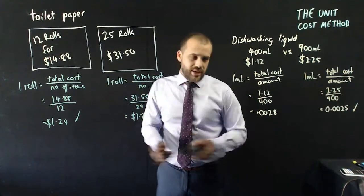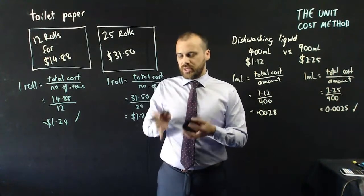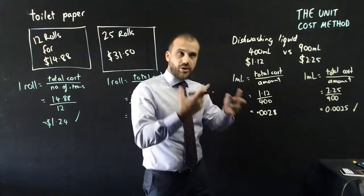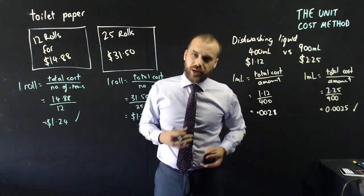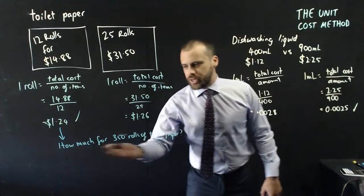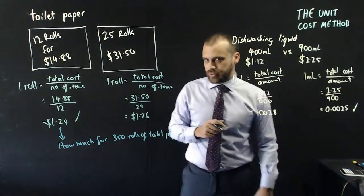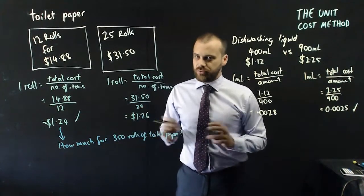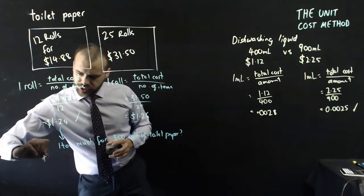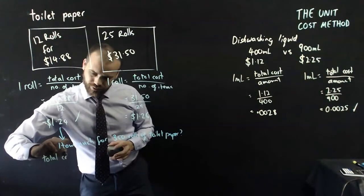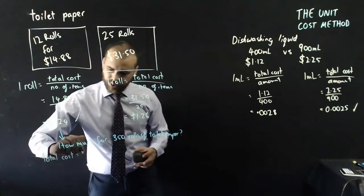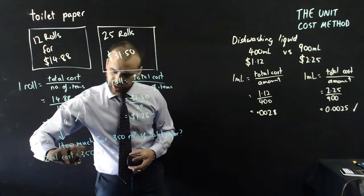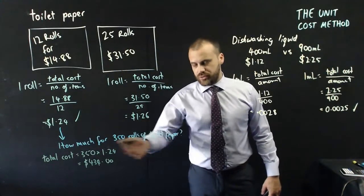In this case, and in this case, I've done some comparing, but you can also do something else with the unit cost method, and that's to figure out how much a certain amount of dishwashing liquid or toilet paper might cost. So someone might ask you, how much is 350 rolls of toilet paper? If it's asked just like this, how much for 350 rolls of toilet paper, the answer is total cost equals 350 times the unit cost, $1.24, and that is going to be $434.